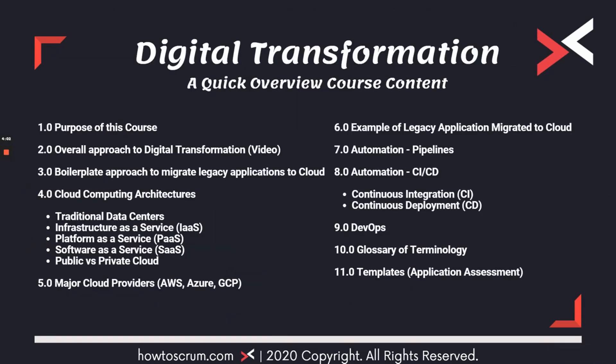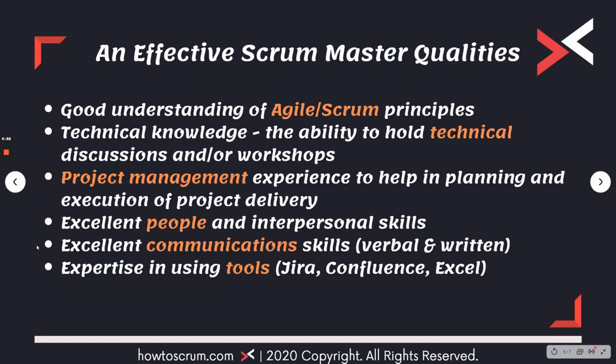In this course, I'll be covering the basics. This is the structure of the course, starting with the overall approach to digital transformation, some of the cloud computing architectures, and the three major cloud providers. I'll also be talking about how to take an application and what questions we should ask when we want to move an application to the cloud — what makes one application a good cloud candidate versus another. Some terminology you might come across includes CICD: continuous integration and continuous deployment. This is automation, this is pipeline. I want you to be aware of those things, including DevOps. I have a template and a glossary of terminologies so you can understand what people are talking about when they mention these acronyms like DevOps and CICD.